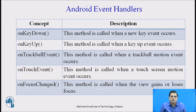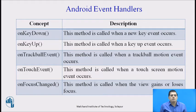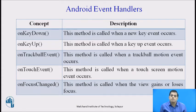Once you define a listener, the associated component will work as an event handler. The event handlers are: OnKeyDown — called when a new key event occurs; OnKeyUp — called when a key up event occurs; OnTrackBallEvent — called when a trackball motion event occurs; OnTouchEvent — called when a touch screen motion event occurs; OnFocusChange — called when the view gains or loses focus. The developer uses all these handlers as per the associated event listeners. Event listeners and event handlers work together to perform an action.